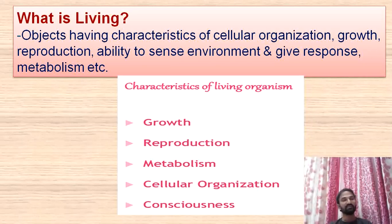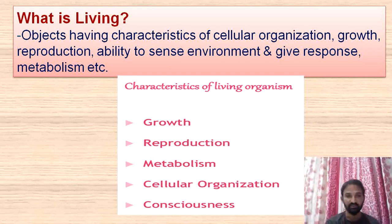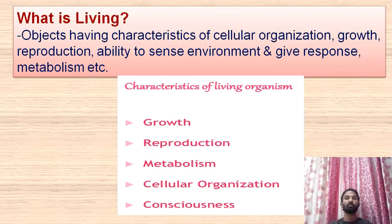Our body is involved in different kinds of metabolic activities. Metabolism is nothing but the sum of biological or biochemical reactions that take place in our body. So the characteristics of the living organism are: first is growth, second is reproduction, third is metabolism, fourth is cellular organization, and fifth is consciousness to the environment and interactions among organisms.